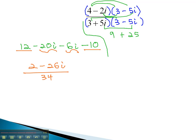To see if we can reduce, we'll factor a 2 out of the numerator, making it 1 minus 13i over 34. Sure enough, 2 and 34 have a common factor of 2. This gives us our final answer, 1 minus 13i over 17.